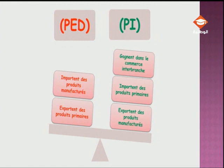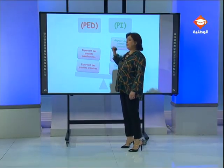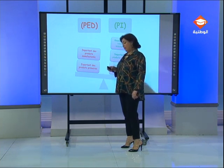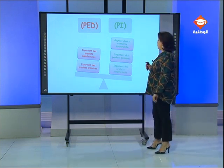Voilà la réponse. Du côté le plus lourd dans le commerce mondial, dans le cadre de l'ancienne DIT, on trouve les PI. Ce sont les PI qui gagnent dans le commerce interbranche, grâce au fait qu'ils exportent des produits manufacturés et qu'ils importent des produits primaires. De l'autre côté, on place les PED, qui se caractérisent par des exportations de produits primaires et des importations de produits manufacturés. Ceci étant, je vous remercie pour votre attention. Je vous conseille de revisionner la séance pour mieux assimiler, et je vous invite à suivre la suite dans la prochaine séance. Merci et au revoir.